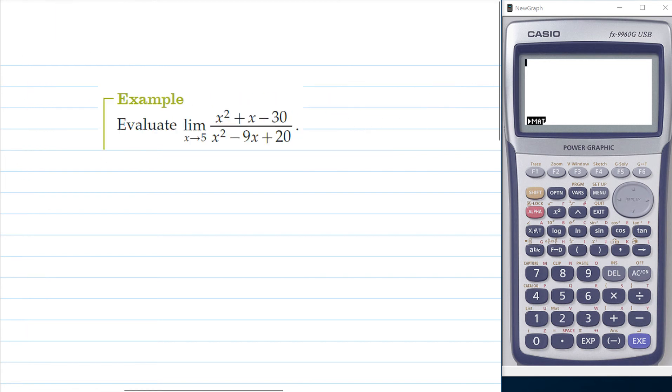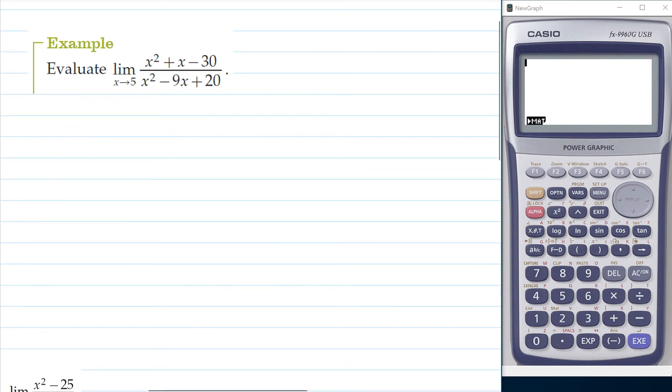In our second example here we're going to illustrate why that doesn't always work. So we'll try to directly substitute 5 in and see what we get. Now if we put 5 squared plus 5 minus 30 into that top part of the function we get 0. If we put 5 into the bottom part of the function, so 5 squared minus 9 times 5 plus 20,